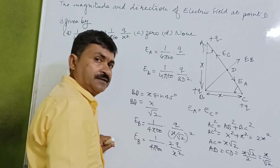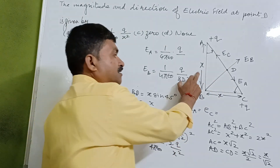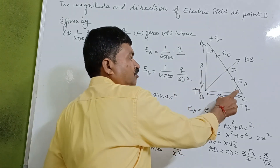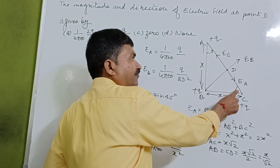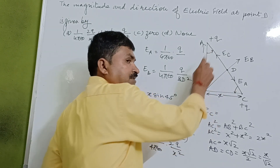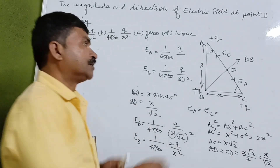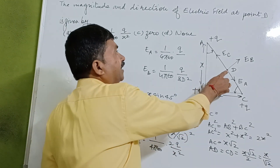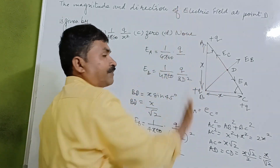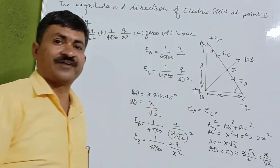If we look at this triangle, which is an isosceles triangle with sides X and X, this angle is 45 degrees and this angle is also 45 degrees. At point D, we have to determine the electric field.